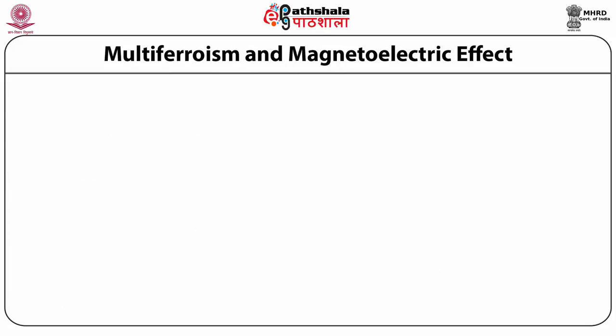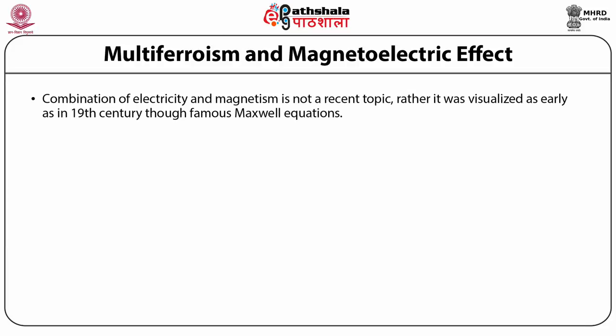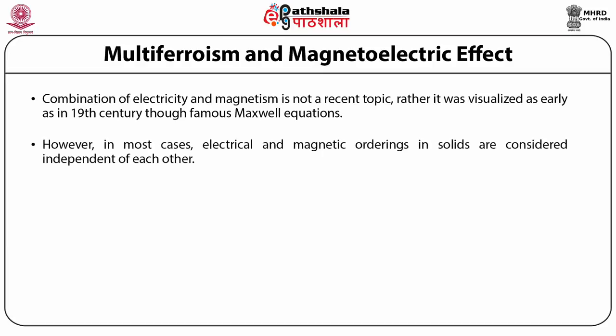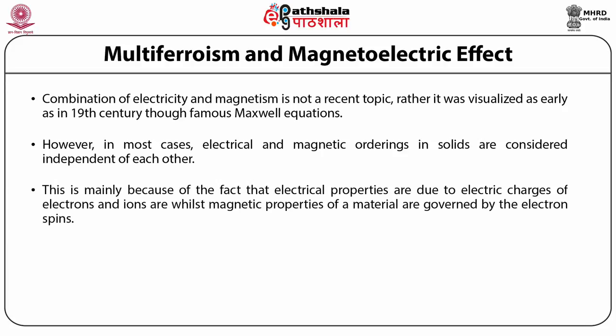Let us discuss the two major effects: multiferroism and the magnetoelectric effect. The combination of electricity and magnetism is not a recent topic — it was visualized as early as the 19th century through Maxwell's famous equations. However, in most cases, electrical and magnetic ordering in solids are considered to be independent of each other. This is mainly because electrical properties are due to the electric charges of electrons and ions, whilst magnetic properties are governed by electron spins.